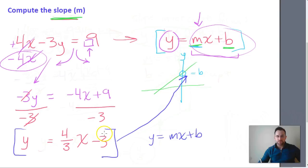So we see b is going to be negative 3. That's going to be the y-intercept of the slope. And we see that the coefficient of x is 4 thirds. That's going to be the actual slope. So that equals the m component, which we're after. All right, cheers.